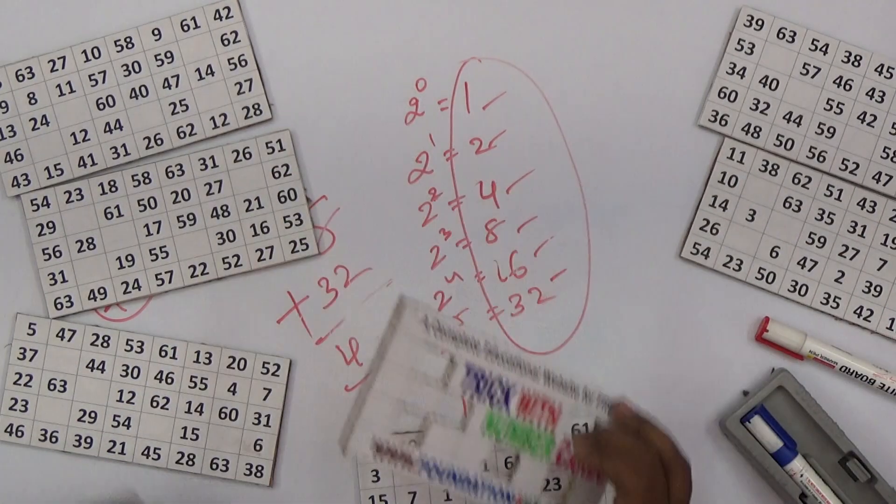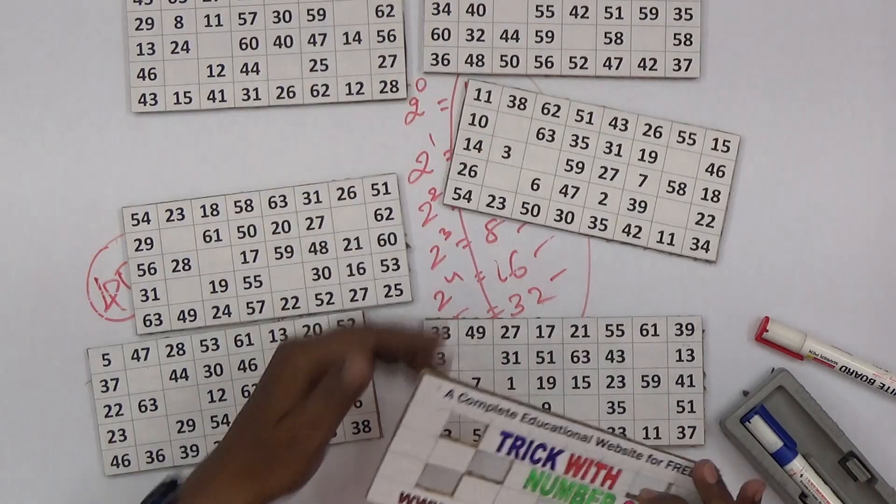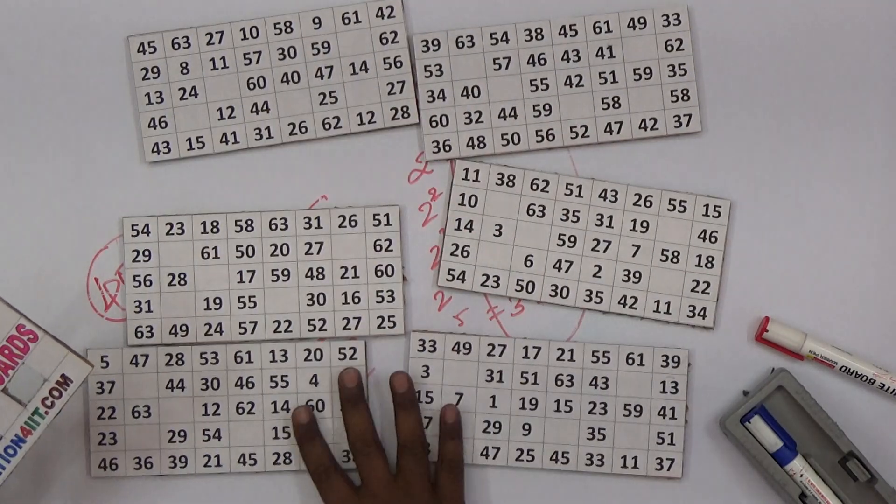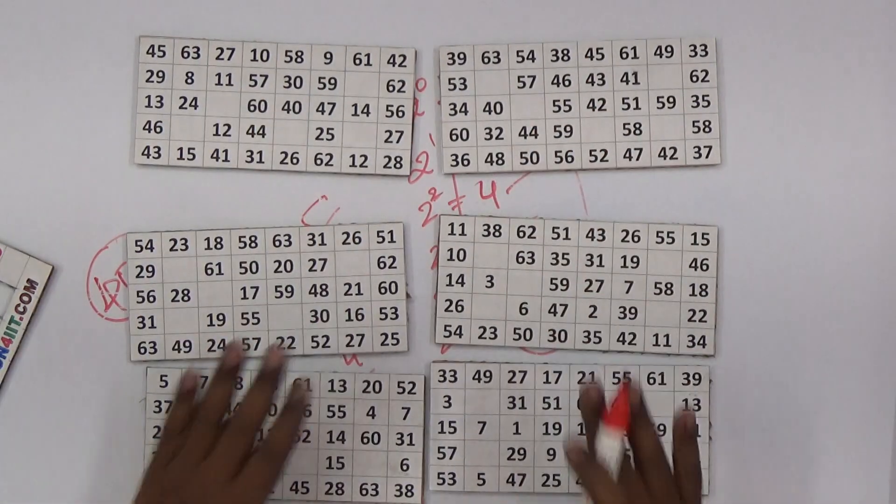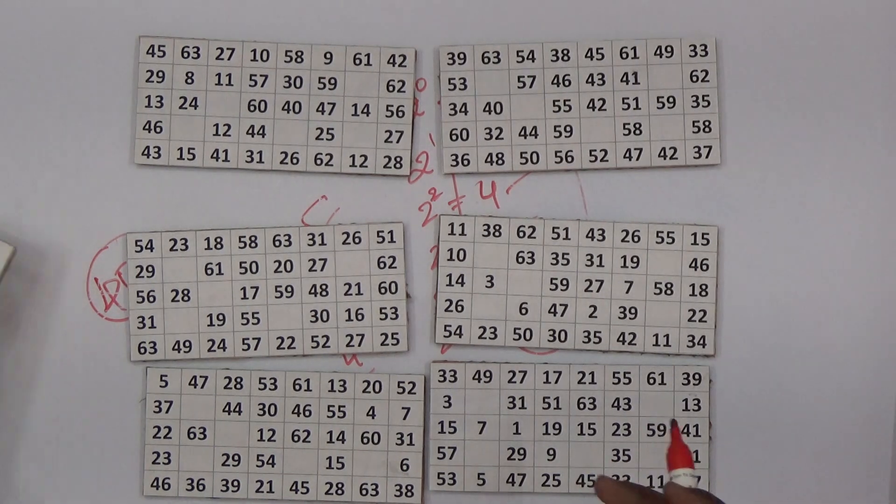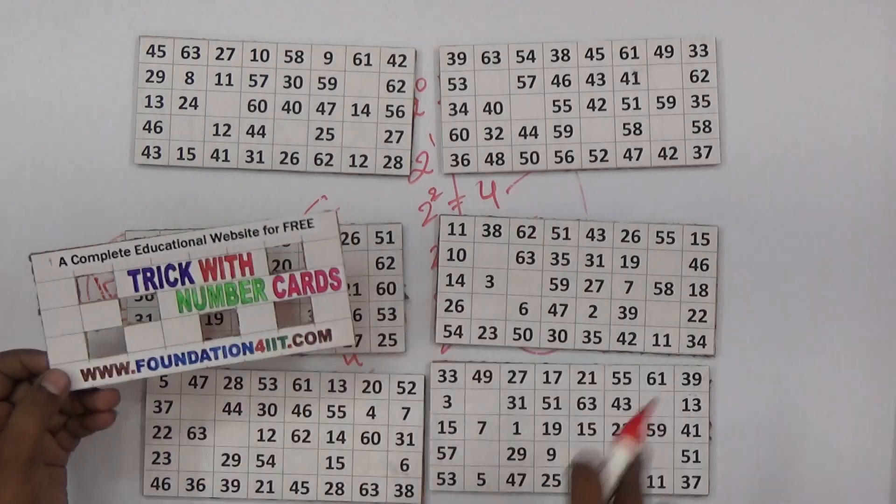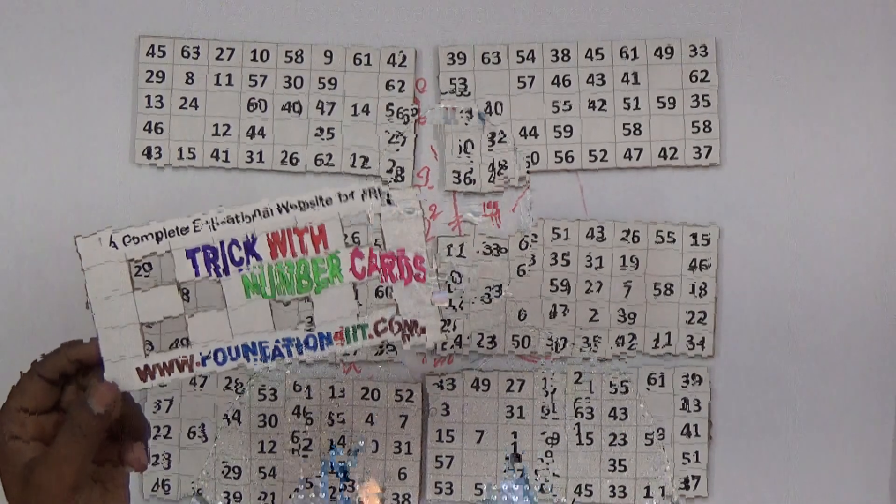This is a trick with number cards. Using this we can test the audience to tell their age also. Whatever the age is, just ask them to pick up that age number cards, ask them to give you, just place on this, add the sum, whatever the number is visible, just add that.